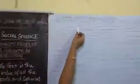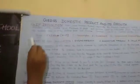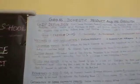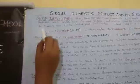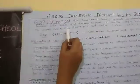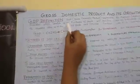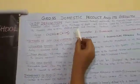We will see Gross Domestic Product and its Growth — the GDP definition. First we will discuss the definition. Gross Domestic Product represents the economic health of a country.